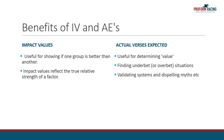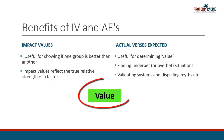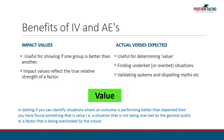Listed on the screen are the benefits of AE Index versus impact values. As punters, why are we interested in using these measures? Well, it all boils down to value. In betting, if you can identify situations where an outcome is performing better than expected, then you have found something that is value — a situation that has not been overbet by the general public, or a factor that has been overlooked by the crowd. Let's see how our AEs are used in the ProForm software.